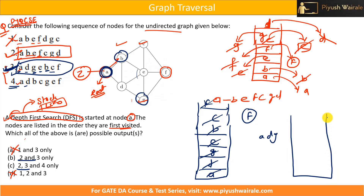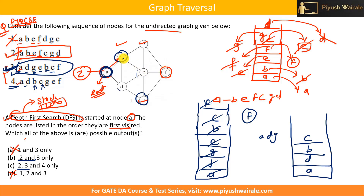Now for option 4: from A I go to D, then from D I go to B instead of G. From B I can go to C, E — A and D are already in the stack. Let's go to C. From C I can go to E and F — but option 4 shows G after C. However, there is no edge from C to G directly, so G cannot be visited immediately after C. Only E or F should follow C. Therefore option 4 is incorrect.